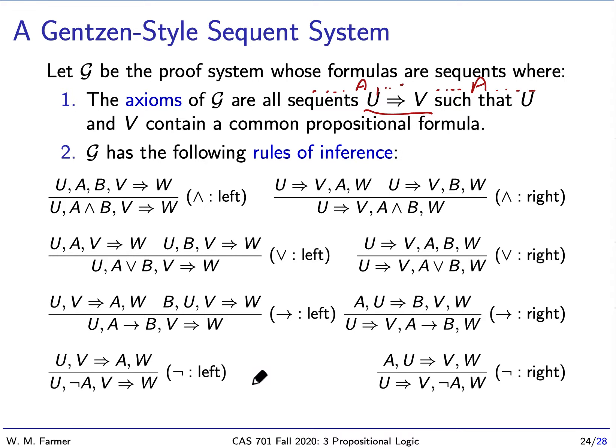The rules of inference are the following. Notice we have a rule for conjunction and another rule for conjunction. The left rule says that if we have a sequent of this form, and we have a and b together, we can replace a and b with a conjunction b. And if we have these two sequents, we can conclude we have this sequent where we have the conjunction of a and b. So we have two rules, a left rule and a right rule for conjunction, disjunction, implication, and negation.